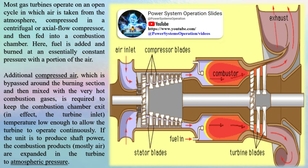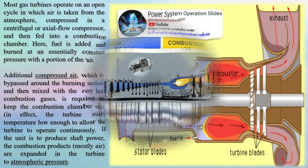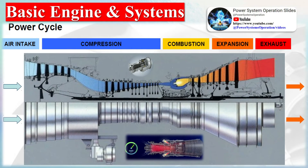If the unit is to produce shaft power, the combustion products — mostly air — are expanded in the turbine to atmospheric pressure. Most of the turbine output is required to operate the compressor; only the remainder is available to supply shaft work to a generator, pump, or other device.